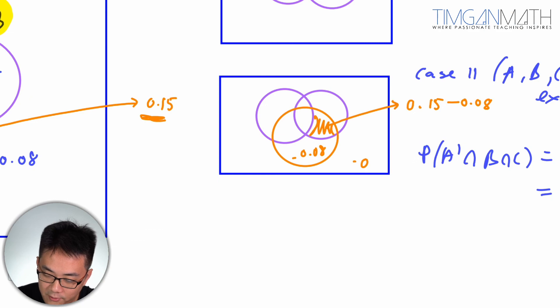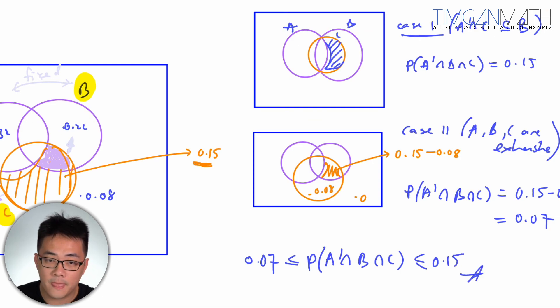So the inequality which satisfy P(A prime intersect B intersect C) will just be 0.07 here, and maximally will just be 0.15. So that's how we do this question here. Now any questions or comments at all, please let us know. Keep practicing and I'll see you in the next question.